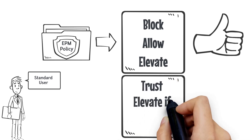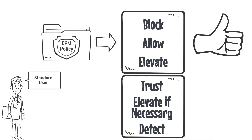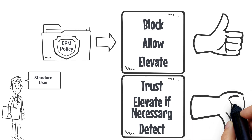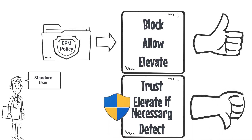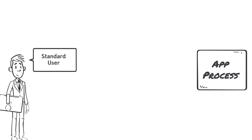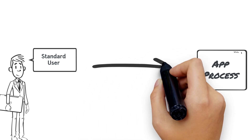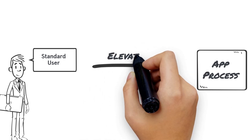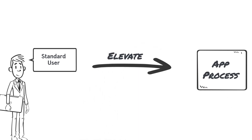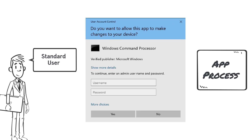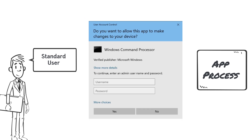Trust, Elevate if necessary, and Detect policies will no longer function as these are dependent on UAC events. Applications and processes attempting to elevate, and not explicitly handled in an Elevate policy, will result in the user being prompted for administrator credentials or forced to run with standard user rights.